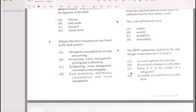Number 9: The most appropriate method for safe storage of uncooked rice is kept in a covered container.